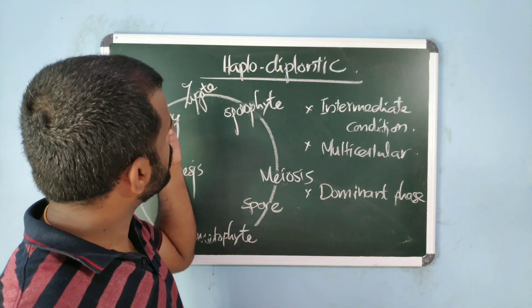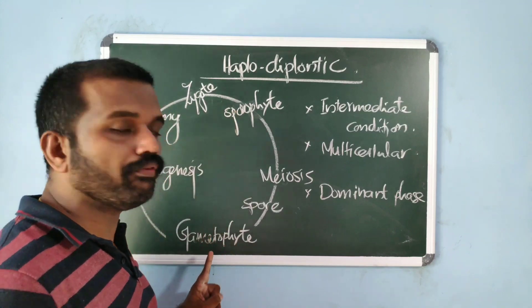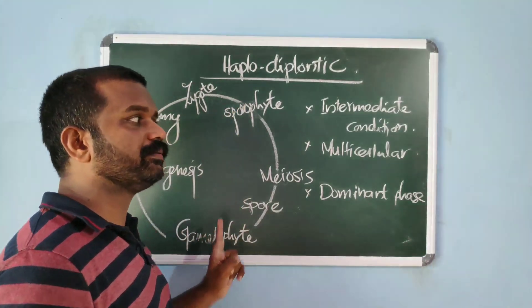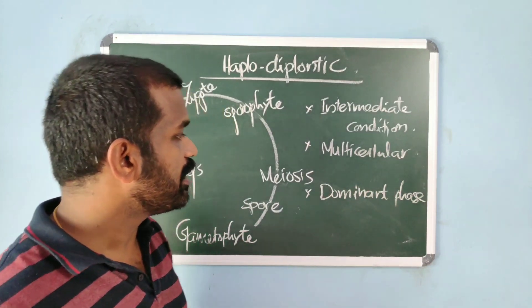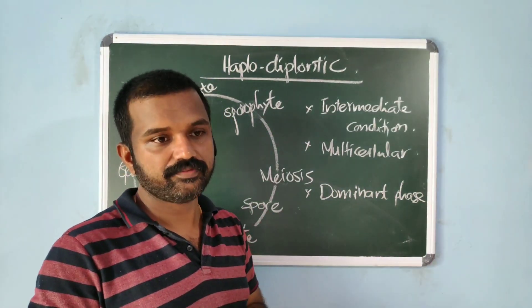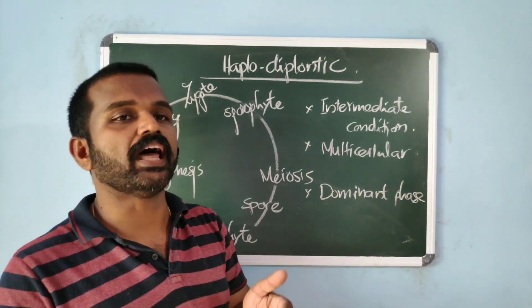Here, both sporophyte and gametophyte are multicellular. And the dominant phase varies in the two plant groups.